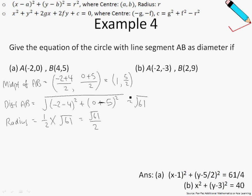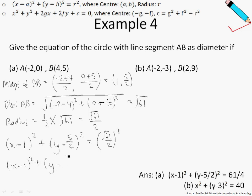With all these pieces of information, I can now perform my substitution into equation number 1. Equation number 1 says: x minus the x-coordinate of the center squared, plus y minus b squared, equals R squared. I'm making use of equation number 1 at the top left-hand corner of the screen. My midpoint is my center, so 1 comma 5 over 2 is my center, and the radius is my R. Substitute into this formula and there you have it.